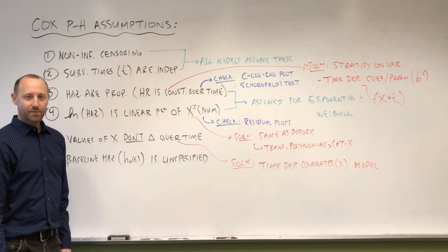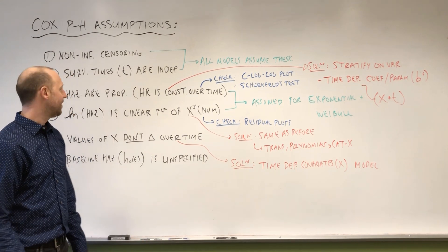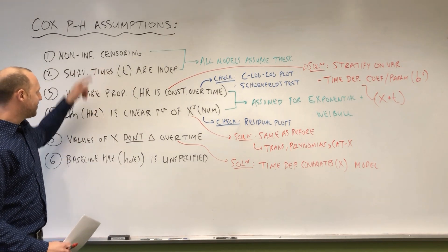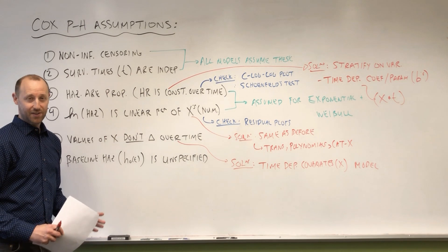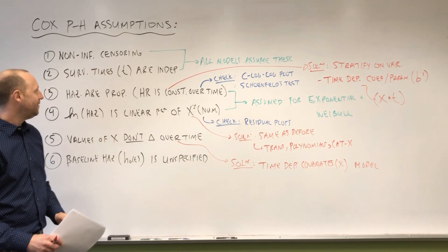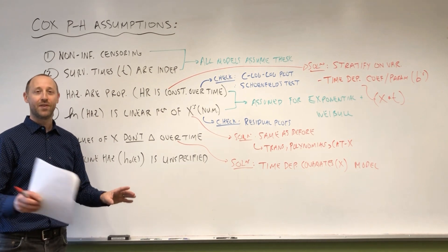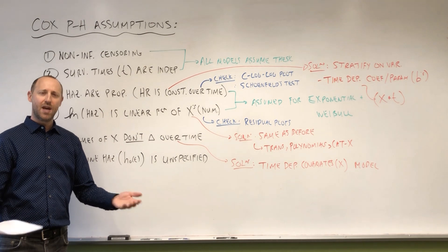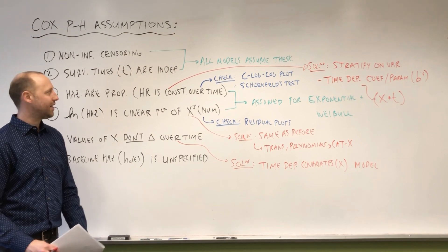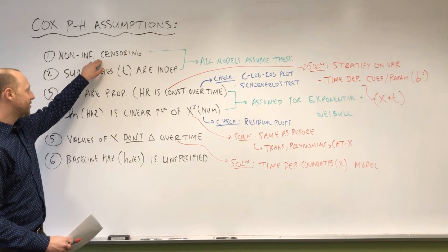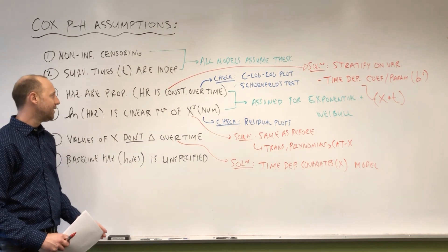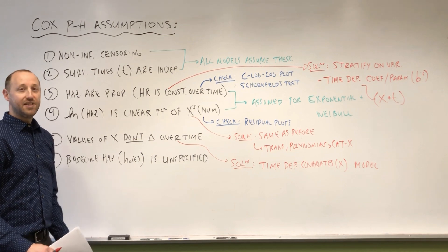And then the sixth one, it's not really an assumption, as we said, it's more of a statement. Well, I guess I skipped over one and two. Non-informative censoring, if that assumption is violated, there's nothing we can really do about it. It's an important one to be met. The way we can try and check that is we can take the censored observations, the non-censored observations, split them into two groups, and try and compare the two of them on values of the other X variables and see if they seem to be differing in any way. So there's that. There's also knowledge of study design that's going to help us decide if that's met. Same with survival times being independent. This is more of a study design type question.